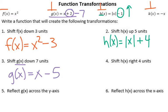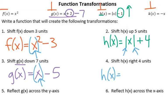Number four: shift h of x right four units. Remember, up and down is outside of what's going on — outside the absolute value, the parentheses, the x, the x squared. When we go right or left, we have to be inside the parentheses. So h of x equals absolute value of x, shifted right four units, would be minus four inside because we do the opposite. Plus or minus one because it's originally minus one. This minus four actually goes to the right because whenever it's in the parentheses, you think opposite.